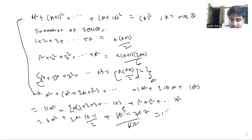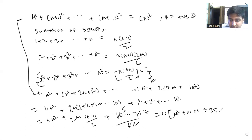After simplification, if we factor out 11, we get 11 times (m² + 10m + 35).